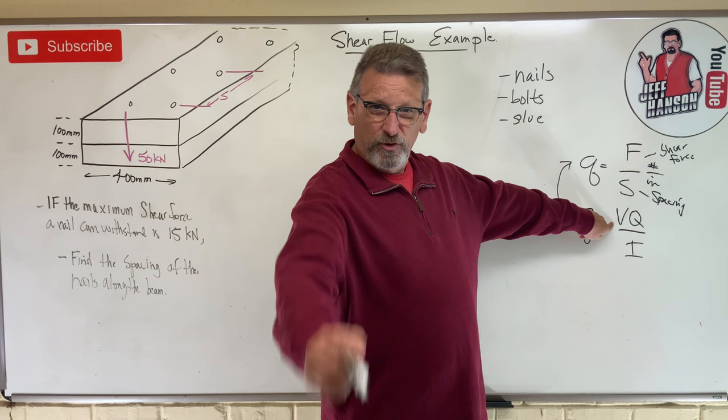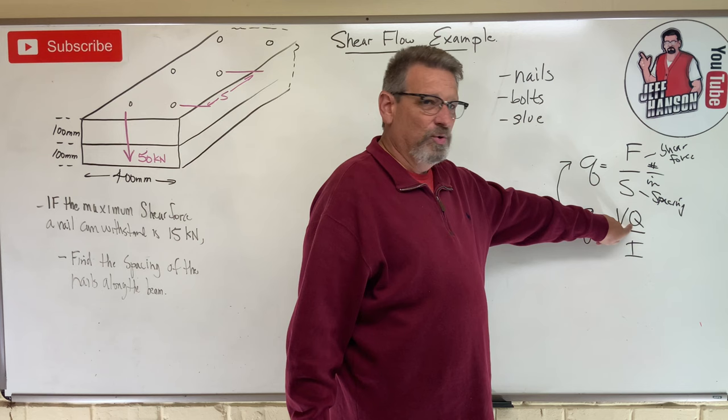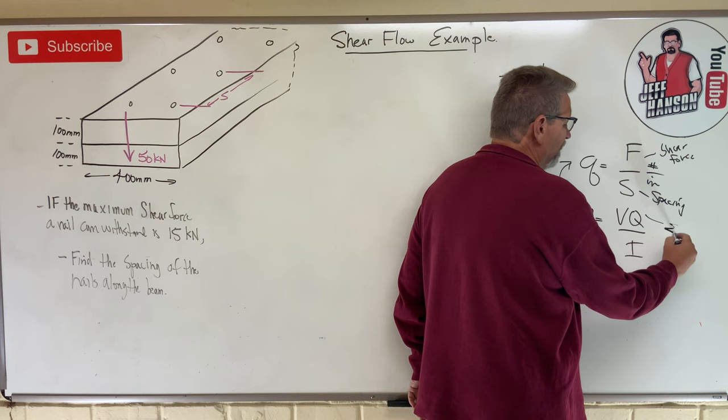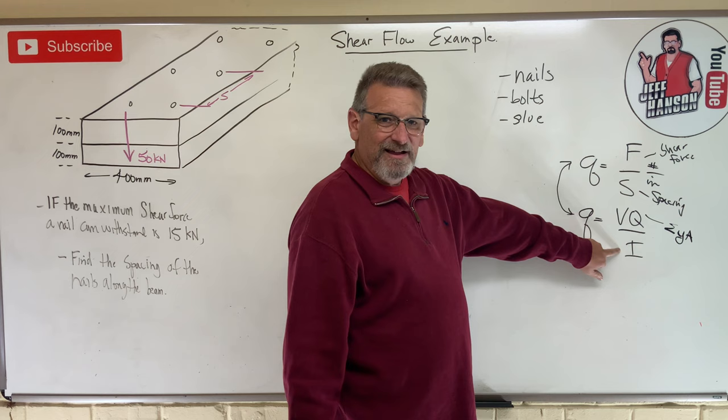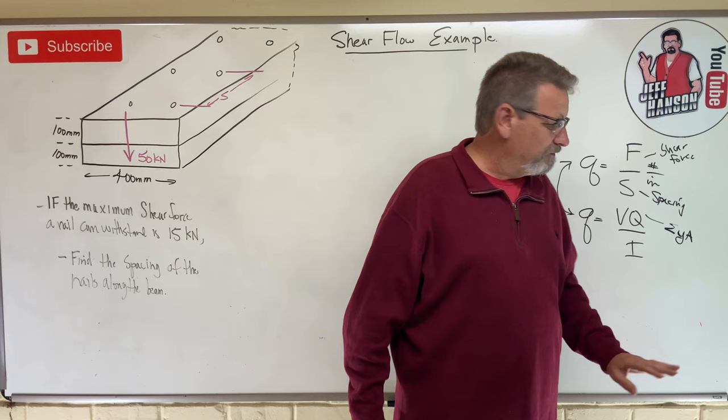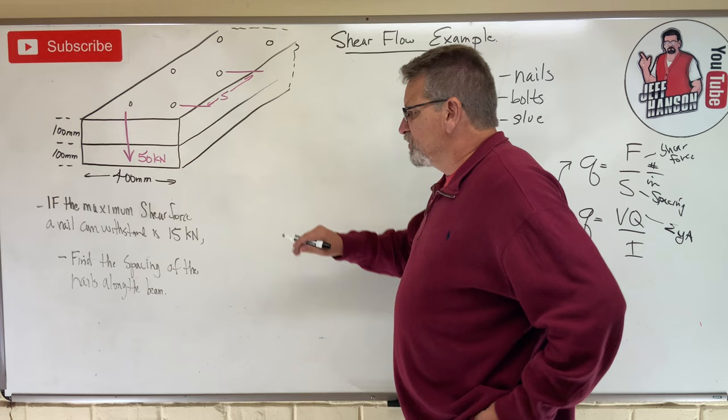Let's see how this works. We know what all the things are. V is that shear force. Where are we going to find that? In our shear moment diagram. Q, what is that? First area moment of inertia. The sum of the YAs, remember that? And then I, the second area moment of inertia for rectangular beams, one-twelfth bh cubed. So we know all the things in these equations.